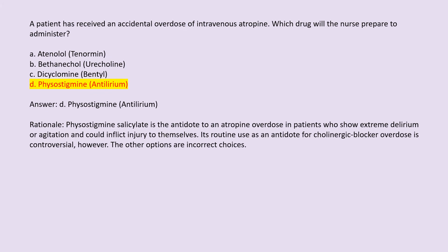Answer: D. Physostigmine (Antilirium). Rationale: Physostigmine salicylate is the antidote to an atropine overdose in patients who show extreme delirium or agitation and could inflict injury to themselves. Its routine use as an antidote for cholinergic blocker overdose is controversial, however. The other options are incorrect.